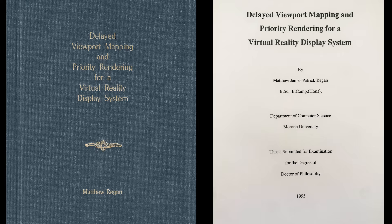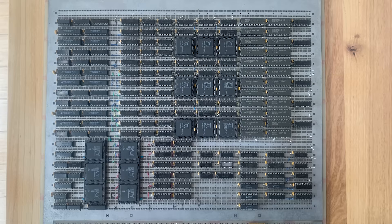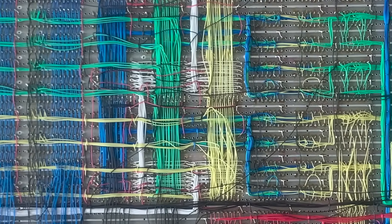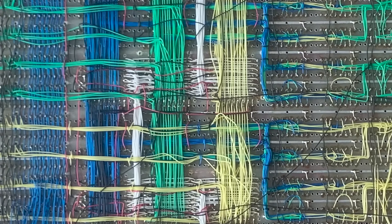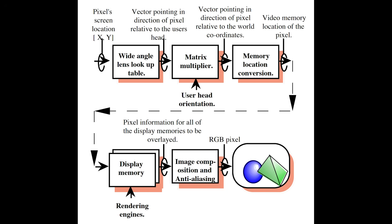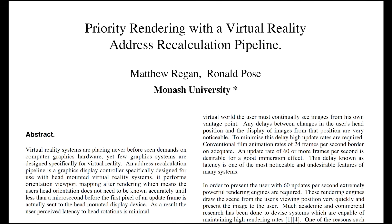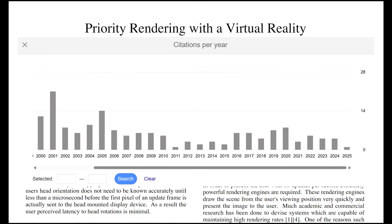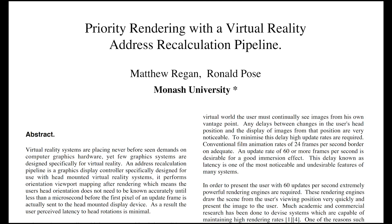Later, during my PhD, I revised my interest in raster generators, combining that early knowledge with what I'd learned about 3D graphics at university to develop this bad boy. Yes, it's point-to-point soldered, and yes, I soldered every joint, and yes, it worked. It's called an address recalculation pipeline, and it was the first ultra-low latency graphics controller specifically designed for virtual reality, and the software version of it is still used today. This paper about how it works is still being cited 30 years after its first publication. Let me know in the comments if you'd like to see me do a series on it.